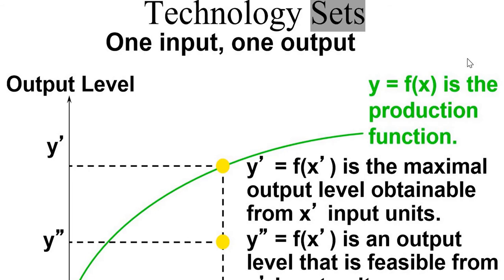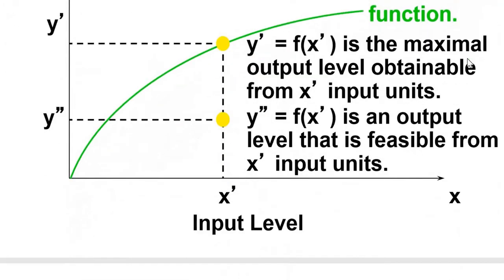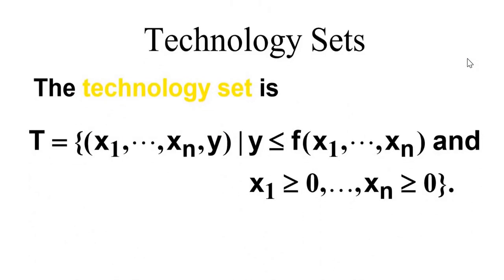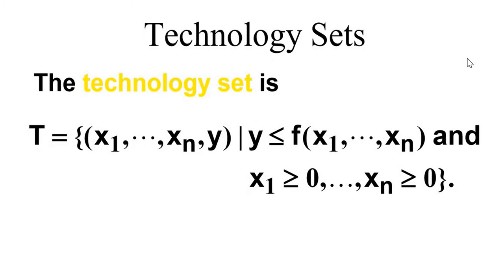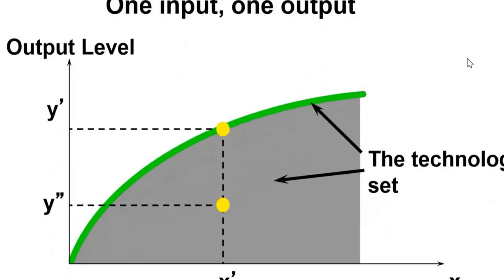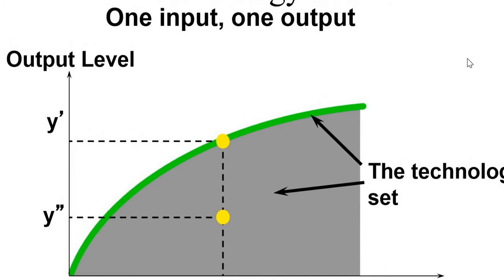Technology set with one input and one output: at each level of input there are two possible output levels, y and y, shown on screen. Both are feasible for one level of input x. The technology set is the area under the curve. The curve rises sharply at first and then flattens over a range. The technology set is basically all the output levels which can be produced with a certain set of inputs.